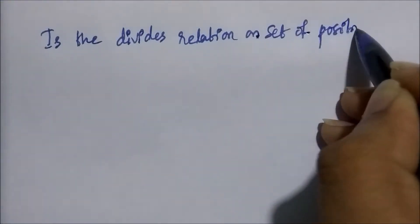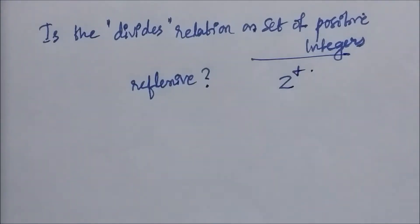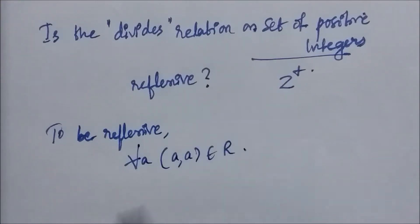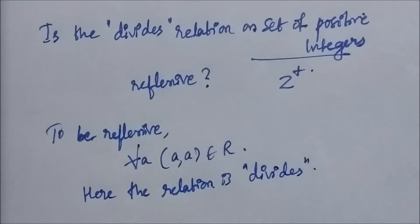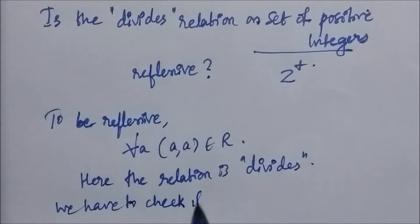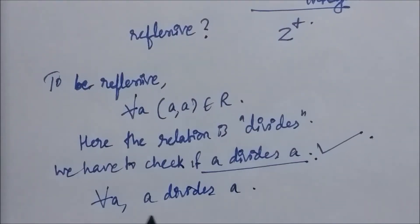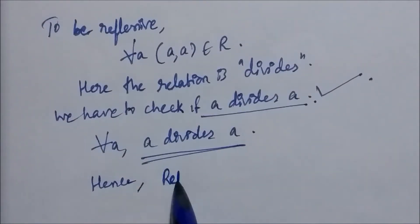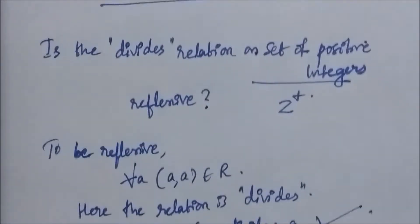Is the divides relation on the set of positive integers a reflexive relation? To be reflexive, it must be the case that (A, A) belongs to R for all A. Here the relation is the divides relation, so we have to check if A divides A for any element A in the set of positive integers. Since A divides A for all A, it is a reflexive relation.